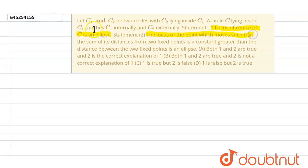And statement two says the locus of the point which moves such that the sum of its distance from two fixed points is a constant greater than the distance between the two fixed points is an ellipse. Now we have to tell which one is correct.